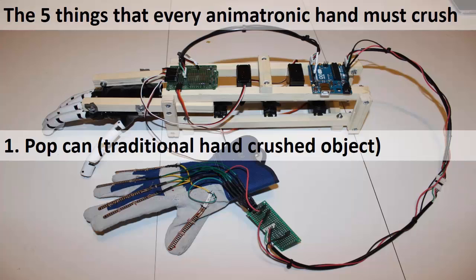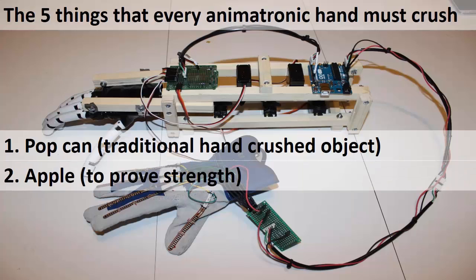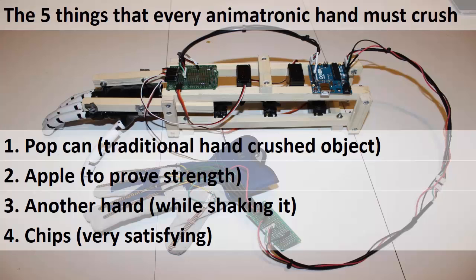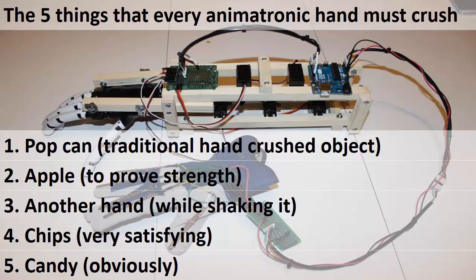Number one, a pop can. Number two, an apple. Number three, another hand. Number four, chips. It's very satisfying. And number five, candy. Because, obviously.